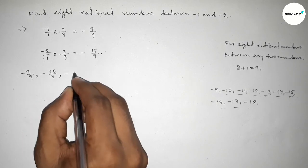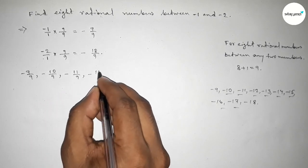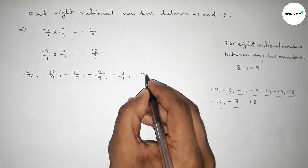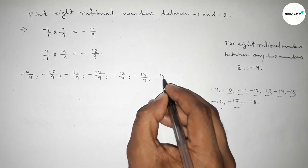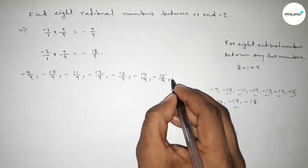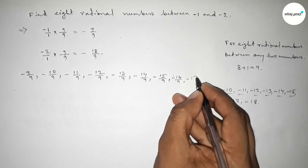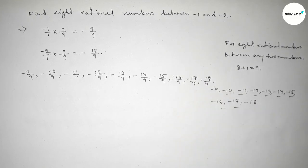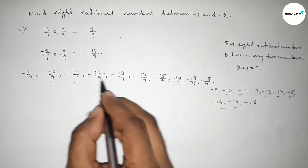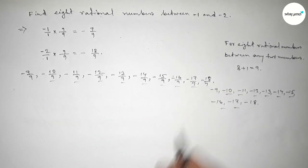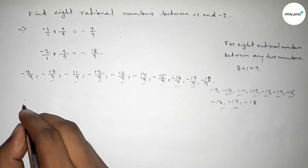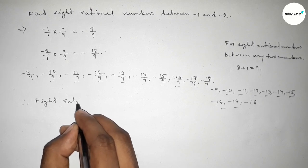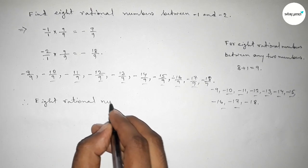Now write down all the rational numbers: minus 9 over 9, minus 10 over 9, minus 11 over 9, minus 12 over 9, up to minus 18 over 9. Among these, these are the required 8 rational numbers between minus 1 and minus 2.